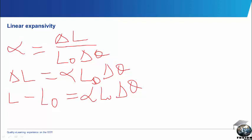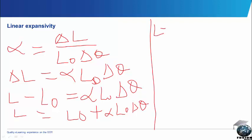Making L the subject of the formula, L0 will cross over the equality sign, so we have L to be equal to L0 plus alpha L0 delta theta. Taking it from that point, we have L equal to, bringing out L0 as factorization, we have L0 bracket 1 plus alpha delta theta.